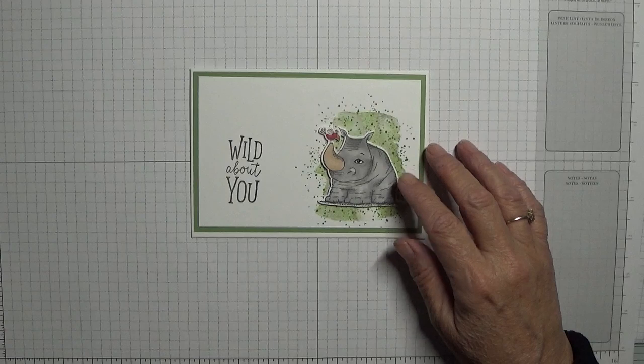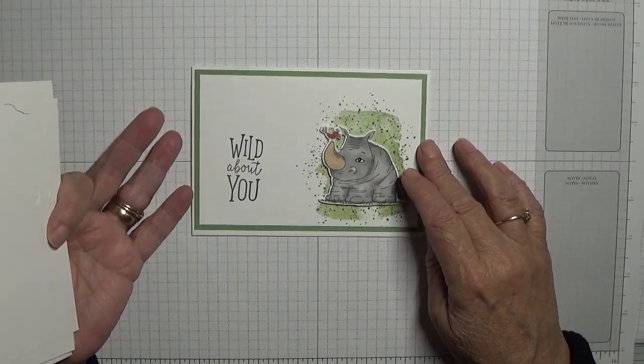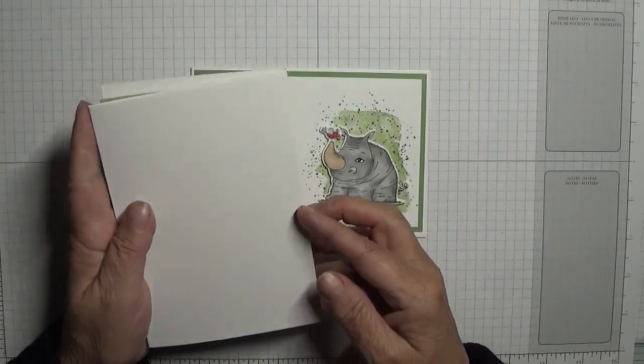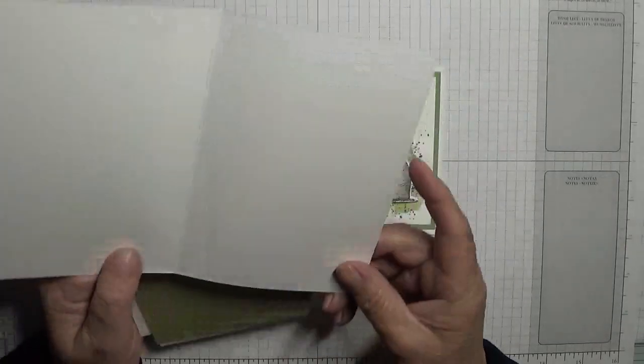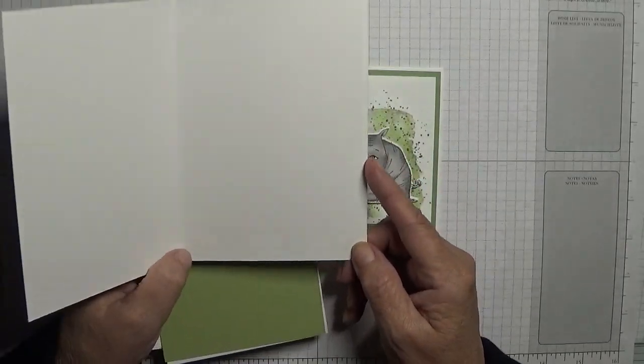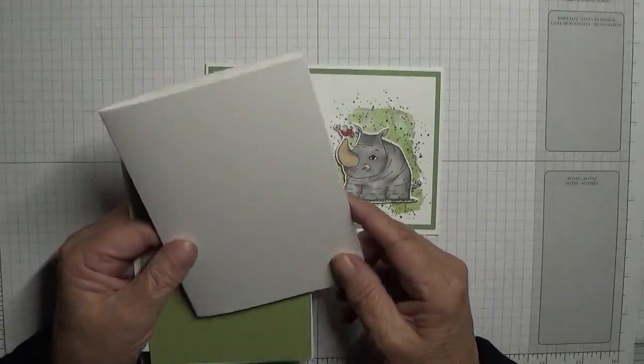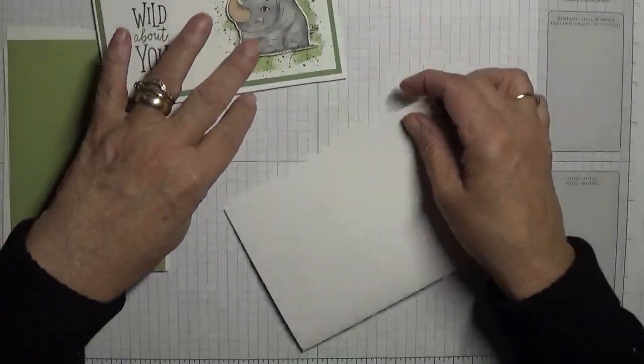In its place I'm going to use pear pizzazz. For this card you will need a white card base, eight and a quarter by five and seven-eighths, scored at four and one-eighth, folded in half and burnished.